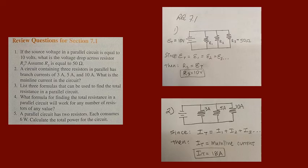Question 2: a circuit containing three resistors in parallel has branch currents of 3 amps, 5 amps, and 10 amps. What is the mainline current? The mainline current is the total current. Using the formula I total equals I1 plus I2 plus I3, we add 3 plus 5 plus 10, which equals 18 amps for the mainline current.